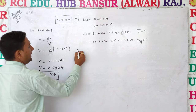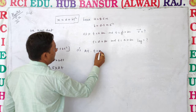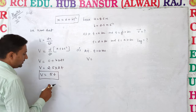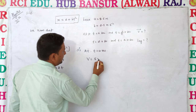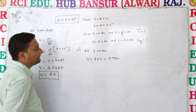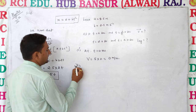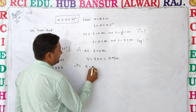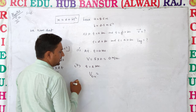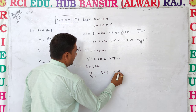First, at t is equal to 0 seconds, the velocity is 0. Next, at t is equal to 2 seconds, the velocity v is equal to 5 times 2, which is 10 meters per second.